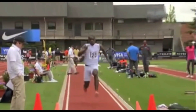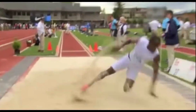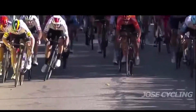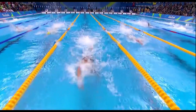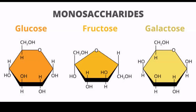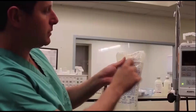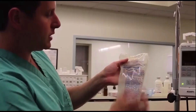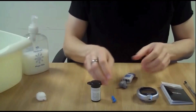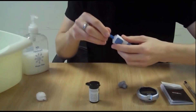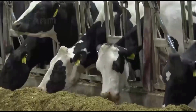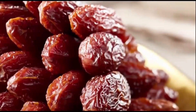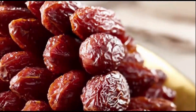Ang purpose ng carbohydrate ay para magbigay ng kumpletong lakas at enerhiya para mapaganda ang performance niya sa laro. Let's have an example of monosaccharide: glucose, used in dextrose, blood sugar — the form utilized by the human body. Ang galactose naman ay matatagpuan karamihan sa mga gatas. Ang fructose ay matatagpuan natin sa mga prutas at honey.